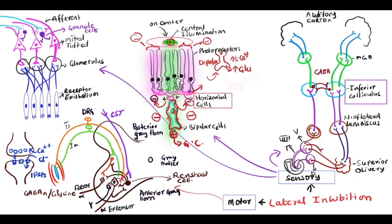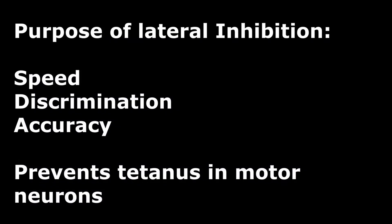In summary, lateral inhibition in both the motor and sensory systems regulates information processing. Its main purposes are to increase the speed of specific information transmission, improve discrimination, and enhance accuracy of sensory information. In the motor system, it regulates the outflow of the anterior horn cell, preventing tetanus-type activation of motor neurons. This is how lateral inhibition in the sensory and motor systems refines and regulates the processing of information.